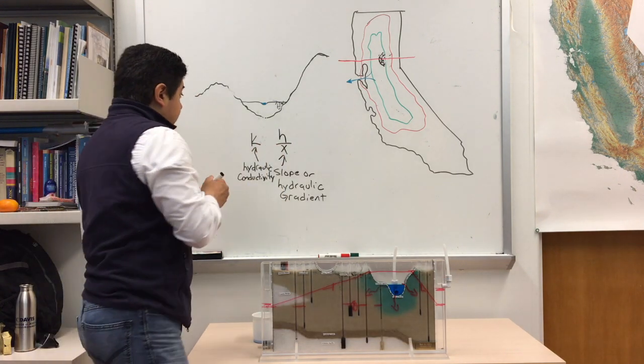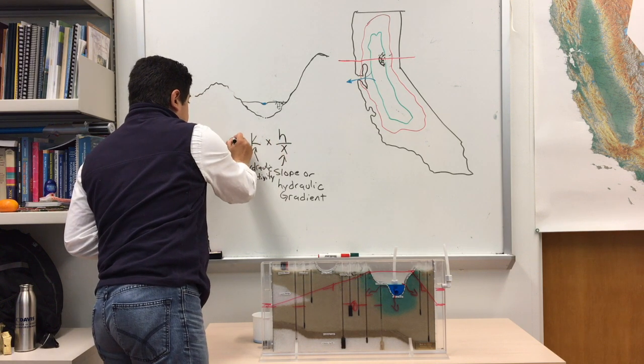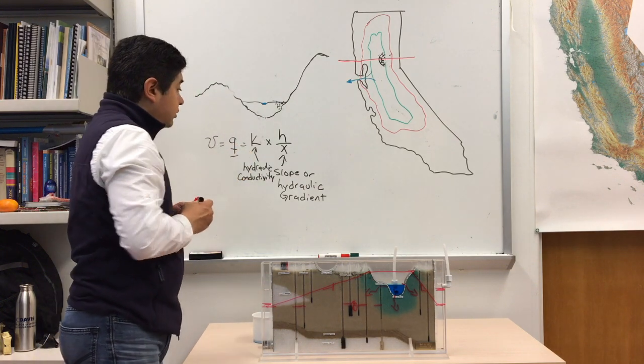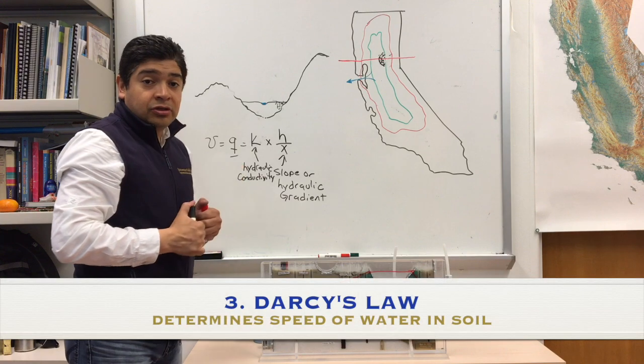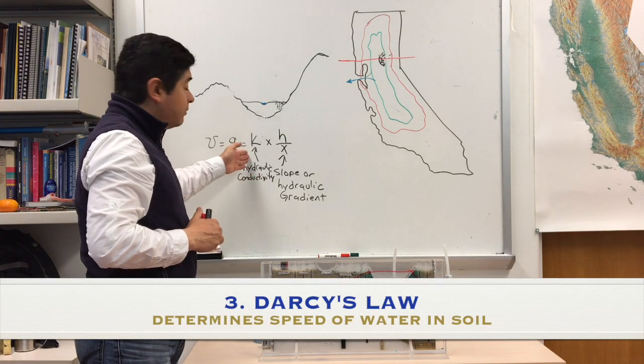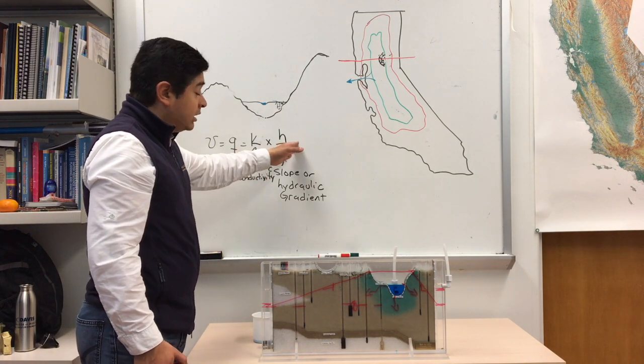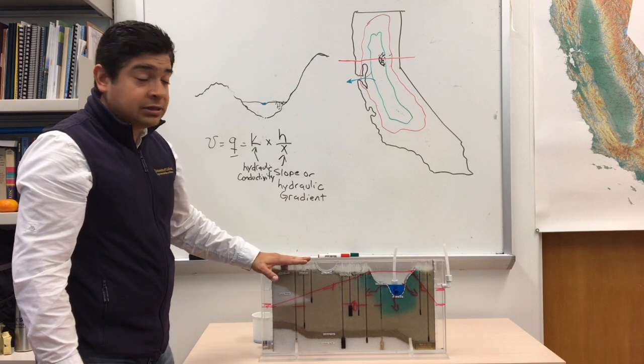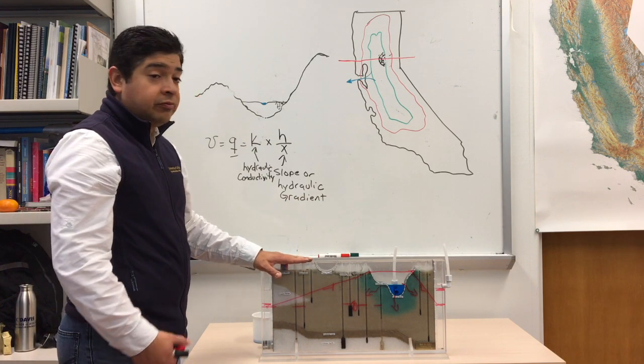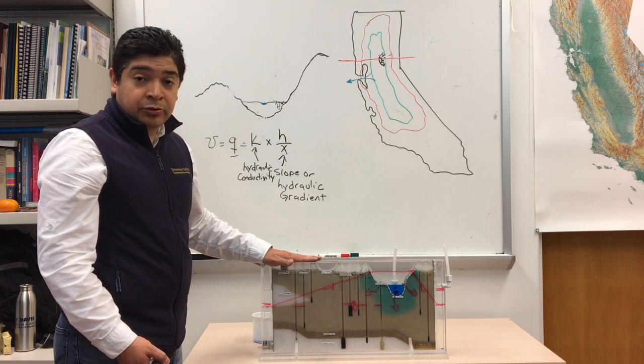If you multiply these two, it will actually have a velocity. That is called a small q. This, what you are seeing here, is Darcy's law. Darcy was a scientist that figured out that depending on the type of material, the type of soil, and how steep was this gradient, it determined how water moved faster or slower throughout the soil, the porous medium.